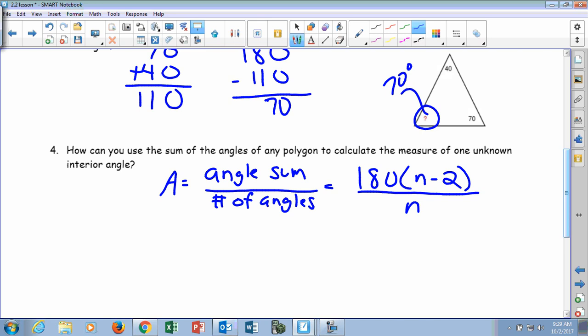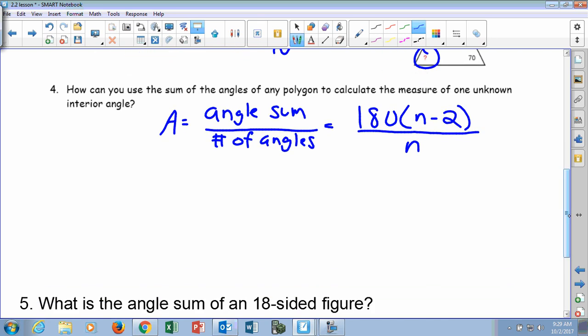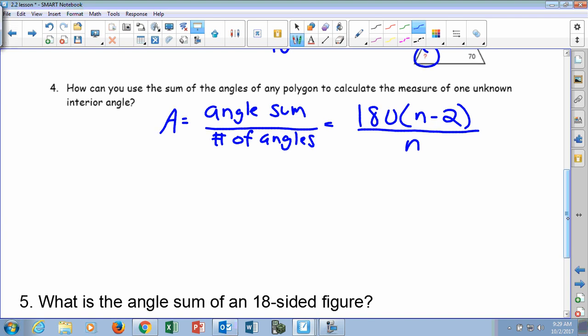So how does it work in an 18-sided figure? Because that would be a fun figure to draw, a figure with 18 sides. But here's how we figure that out. I'm going to try to do the work here so you can see it. So first of all, the angle sum. If it's 18 sides, we're going to plug 18 in up here. So 180 times 18 minus 2. Now, order of operations tell us we do what first? Parentheses first. Good, Gavin. So what's 18 minus 2?